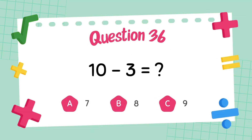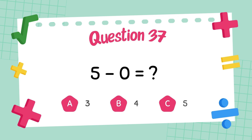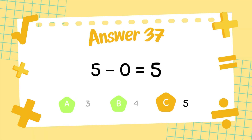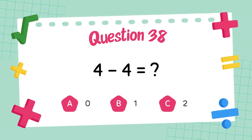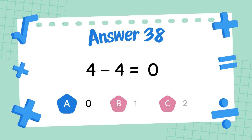What is 10 minus 3? The answer is 7. What is 5 minus 0? The answer is 5. What is 4 minus 4? The answer is 0.